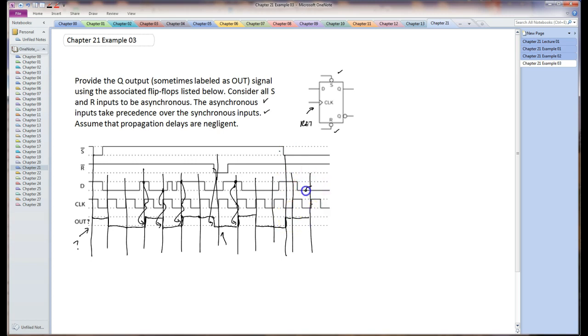We have a clock edge. The D is low but it says that this asynchronous input has precedence and therefore it does not go low. So once again here's a clock edge of D is a zero but this set input has precedence over it. Somewhat messy but we're done.